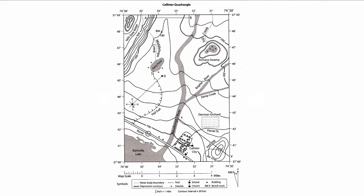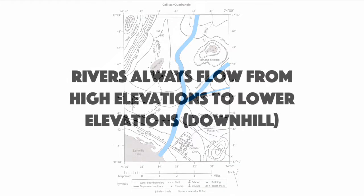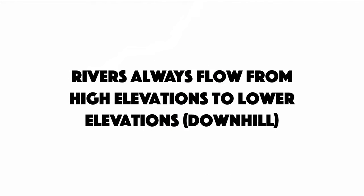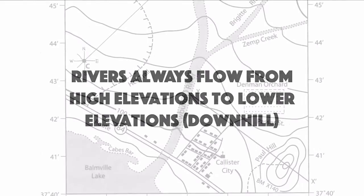For our final feature, we're looking at creeks and rivers, which also includes streams — they can be treated the same. Most topographic maps will feature at least one or two rivers, creeks, or streams. This map happens to show the Newburgh River and two tributaries, the Brigitte and Zemp Creek, which flow into the Newburgh River. Typically you'll be asked to identify the direction in which they're flowing. Rivers will always flow from high elevations to lower elevations.